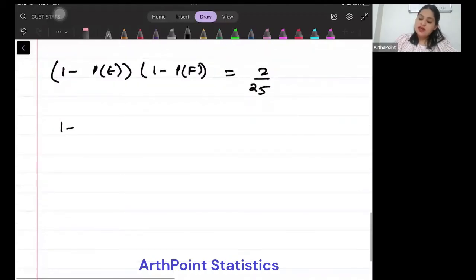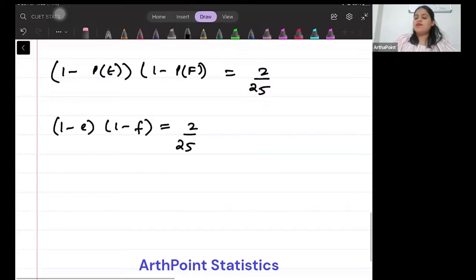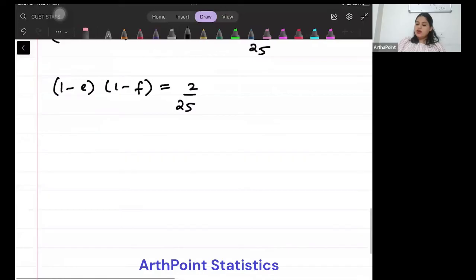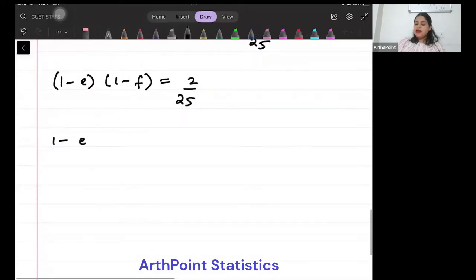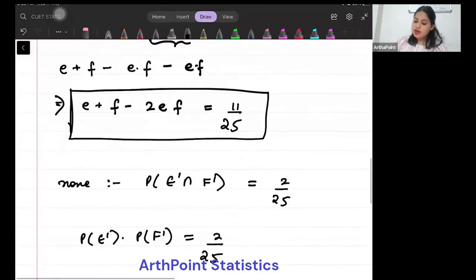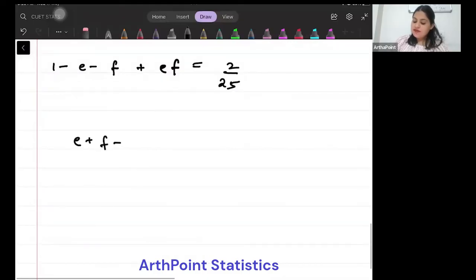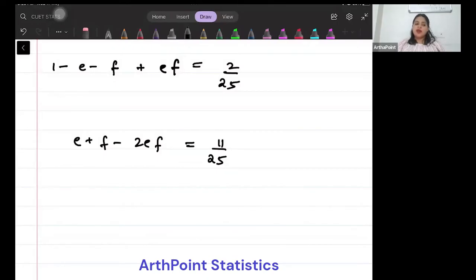So this becomes one minus E minus F plus EF equals 2 by 25. So I have two equations and two variables: E plus F minus 2EF is 11 by 25, and one minus E minus F plus EF is 2 by 25.